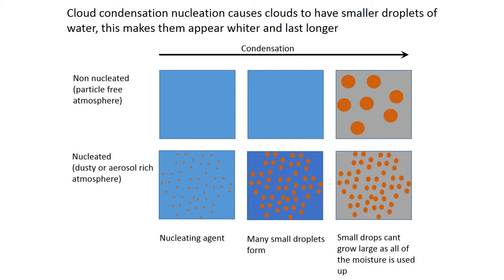Although a volcano gives off greenhouse gases — SO2 is a greenhouse gas but doesn't last long, and CO2 is a greenhouse gas — this effect of making the atmosphere more reflective vastly overcomes the relatively small amount of CO2 from the volcano. The atmosphere has a very low concentration of sulphur dioxide because it forms clouds that rain out, whereas the concentration of CO2 in the atmosphere is much higher compared to the amount being added from volcanoes.